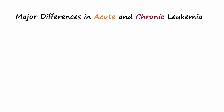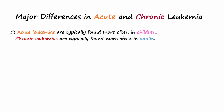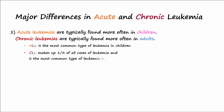Chronic and acute leukemia differ in three main ways. First, acute leukemias are typically found in children while chronic leukemias are typically found in adults. Acute lymphoblastic leukemia (ALL) is the most common type of leukemia in children, and CLL, which makes up one third of all leukemias, is the most common type in adults.